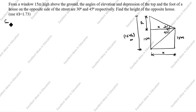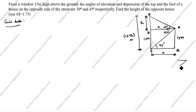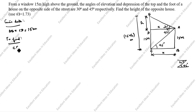Now let's write the given data. We label the points A, B, C, D, E. Since the angle of depression is 45 degrees, the alternate interior angle is also 45 degrees — as we studied in earlier grades. Given: AB = CD = 15 meters. We need to find CE, the height of the opposite house.